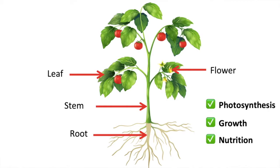Leaves are usually big and flat in order to absorb a lot of sunlight for photosynthesis. If you would like to learn more about the process of photosynthesis, then click the video here.